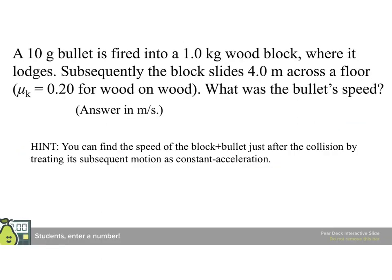Alright, a 10 gram bullet is fired into a 1 kilogram wood block where it lodges. Subsequently, the block slides 4 meters across the floor where mu equals 0.2. What was the bullet's speed? And there's a hint here which is that you can find the speed of the block and bullet just after collision by treating subsequent motion as constant acceleration.